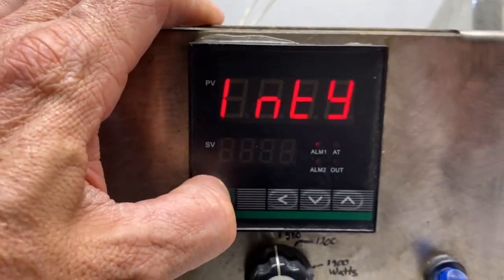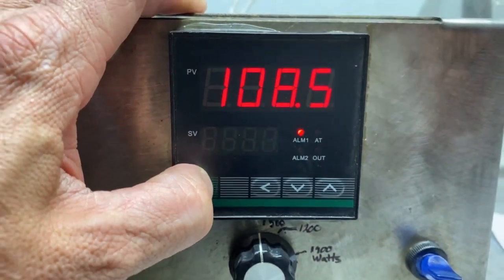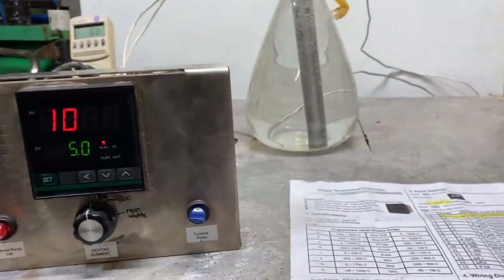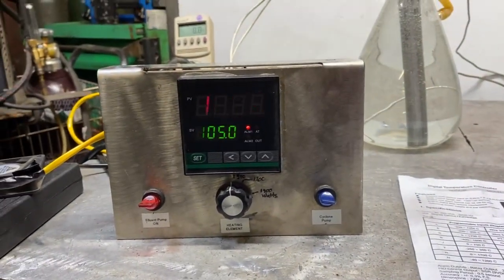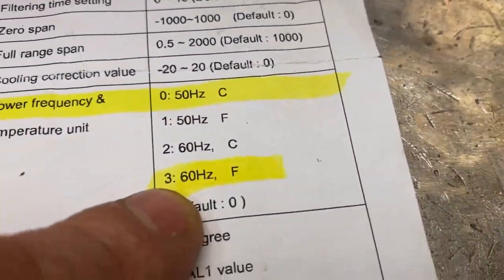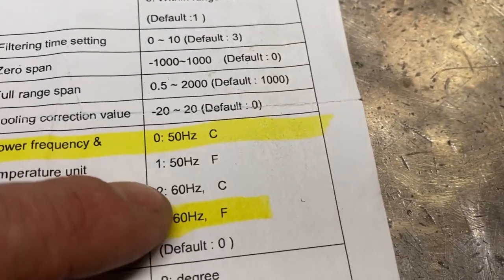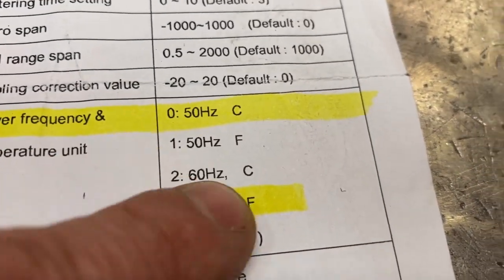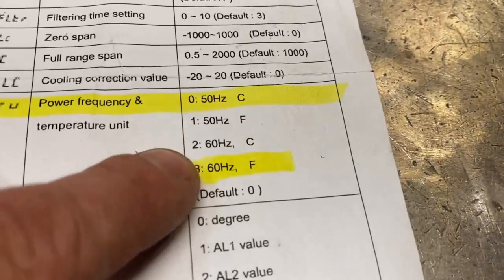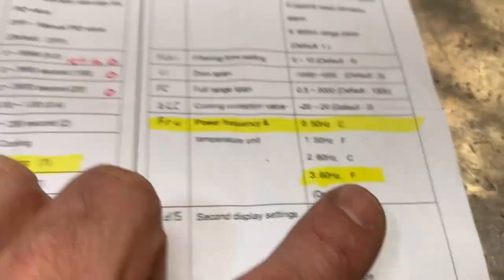So we're going to hold the set button to get out of this. It will also automatically do that after 30 seconds. Now, to get us to Fahrenheit on your system, we would go to FRU. And what you're currently set on is 60 hertz Celsius. So we want to go down to number three, which is 60 hertz Fahrenheit.